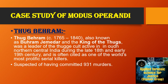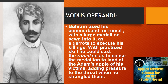Coming to our last topic: case studies related to Modus Operandi. The first one is Thak Bhaeram, also known as Varam Jamedar and the King of Thaks, who was the leader of the Thaki cult active in northern central India during the late 18th and early 19th century. He is often cited as one of the world's most prolific serial killers, suspected of having committed 931 murders. His Modus Operandi was using his kamarband or rumal with a large medallion sewn into it as a garrote. With practiced skill, he could cast the rumal so that the medallion would land at the Adam's apple of his victims, adding pressure to the throat when he strangled them.